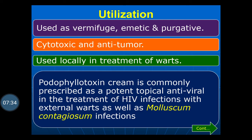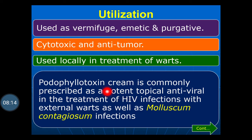Uses of podophyllotoxin: it is used as an vermifuge, emetic and purgative. It causes paralysis of worms so they can be expelled from the gastrointestinal tract. It is also used as a cytotoxic and anti-tumor agent for the treatment of cancer. It is used locally in the treatment of warts. Podophyllotoxin cream is commonly prescribed as a potent topical antiviral agent, used in the treatment of HIV infection, external warts, and molluscum contagiosum infection.